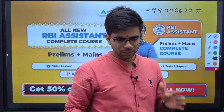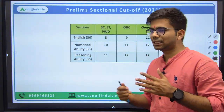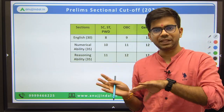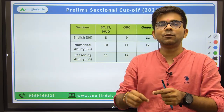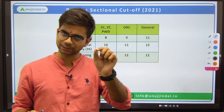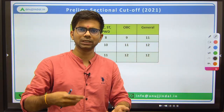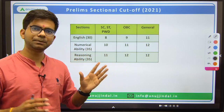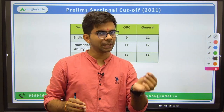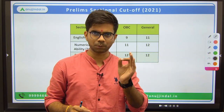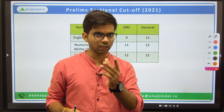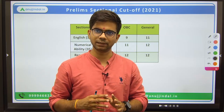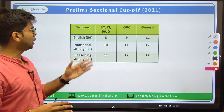First I will be discussing the cut-off of the last year, which was the 2021 exam — the notification came in 2021 but the exam was held in 2022 due to delays from COVID, so I'll call it the 2021-22 exam. For RBI Assistant, you have prelims, mains, and then a language proficiency test. Prelims and LPT are qualifying in nature; the final merit list is based only on mains scores.